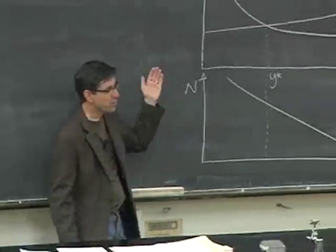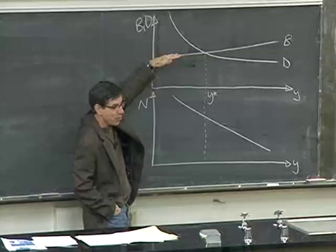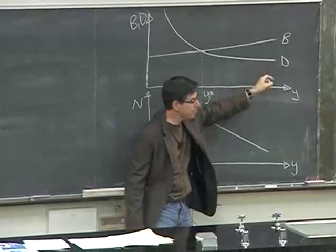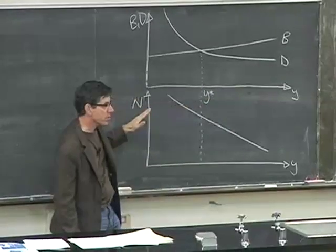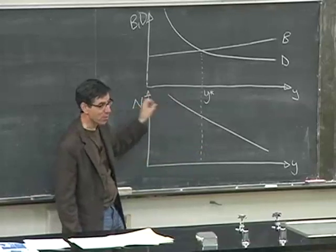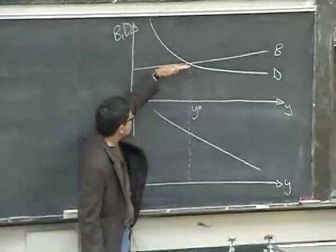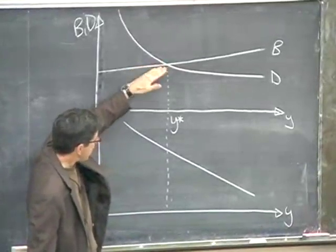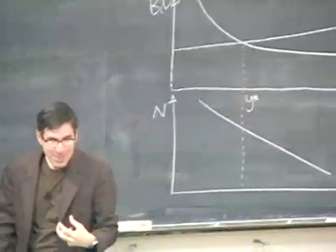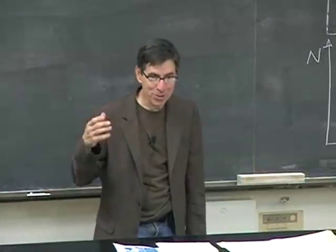In terms of laying out this model: I've shown how we can think of the world in terms of a birth rate schedule with birth rates increasing in income, a death rate schedule with deaths decreasing in income, and a connection between population and income per person — the higher population is, the lower income per person. In this world, living standards are determined totally by birth rates and death rates. There's nothing we can alter about production technology that will actually change living standards in this Malthusian world.